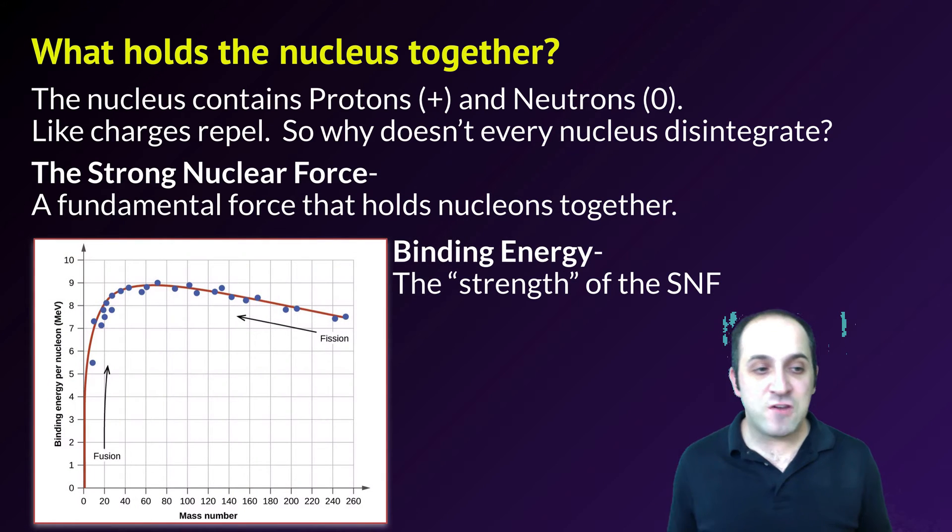And so this graph is just showing you the amount of energy that's put into holding each nucleon together in a bunch of different atoms of various different masses. And you can see that it increases as the mass of the nucleus increases up to a certain point, and then it starts to decrease. And this helps to explain why once we get too big, everything is just unstable.